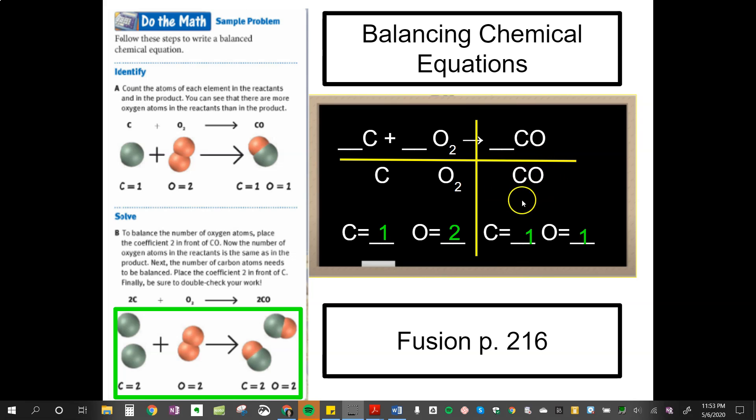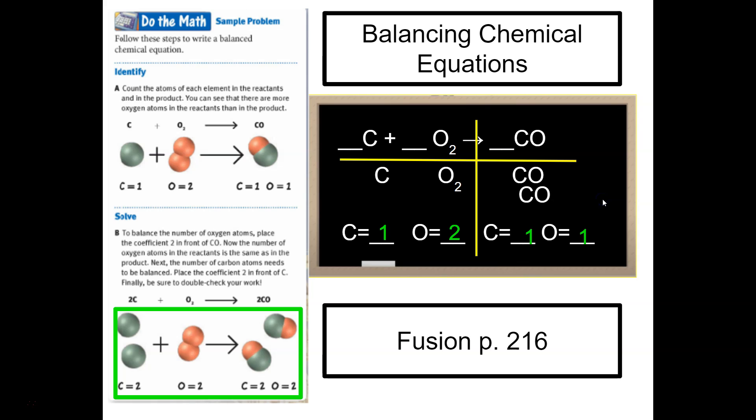So to balance, we're going to add another CO, carbon monoxide, and that will bring up our number of oxygens. It also brings up our number of carbons to two, and now we're unbalanced again in a new way.